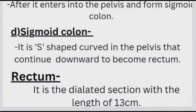The descending colon comes down on the left side of the abdominal cavity and curves toward the midline. After entering the pelvis, it forms the sigmoid colon, which is an S-shaped curve in the pelvis that continues downward to become the rectum.